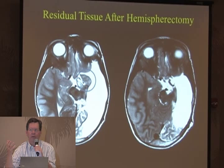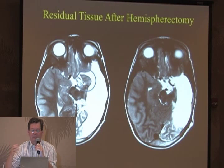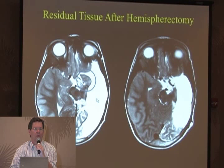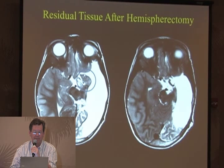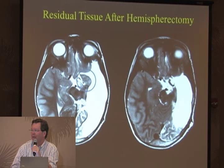I operated on one of our kids, and we got seizure control for about 18 to 24 months, and then the seizures recurred. They're very difficult to isolate because there's a lot of space and the scalp EEG doesn't show you much. On imaging, there's just this small piece - here's my cut, and I left this piece behind because I was very close to the hypothalamus and other areas. I thought I should be able to leave that behind and get away with it.